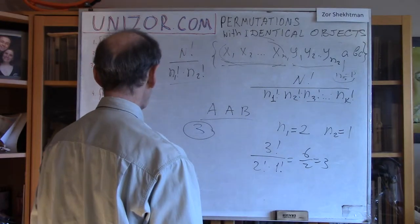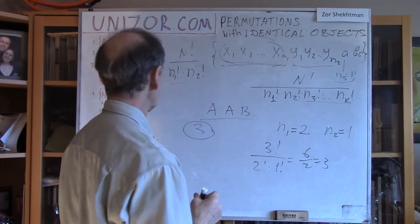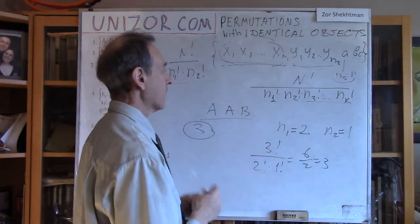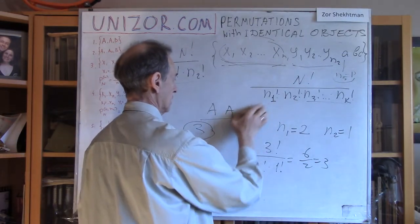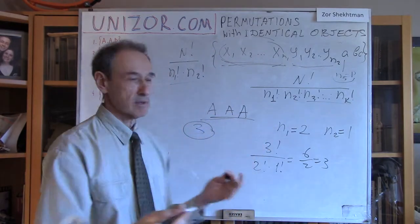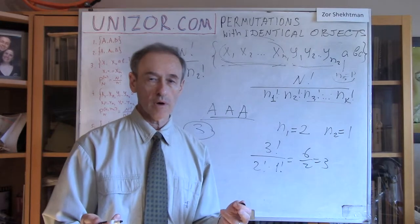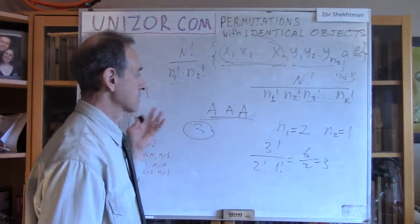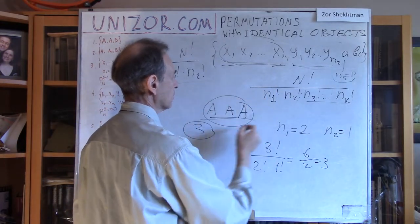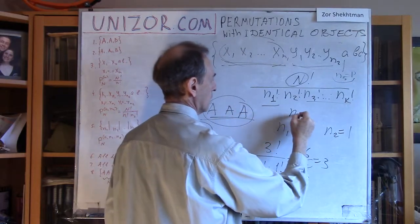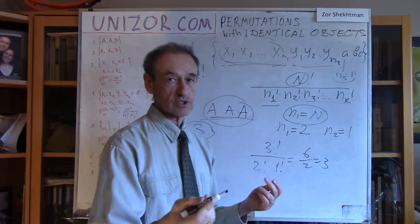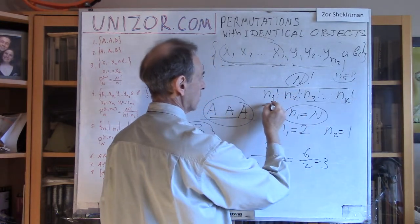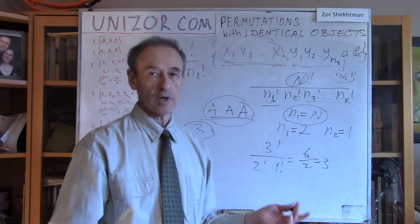Let's check an extreme case: all elements are the same. No matter how we change their order, it's one permutation, so the answer should be 1. In this case n1 = n — the group size equals the entire set — and there are no other groups. So the formula gives n factorial divided by n factorial, which equals 1. The formula holds.